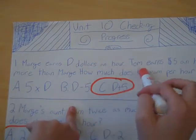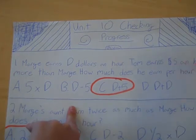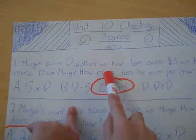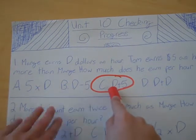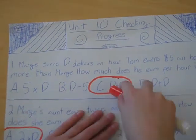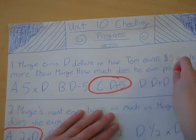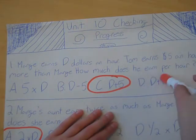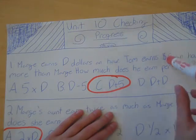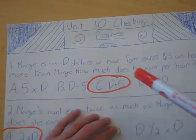Marge earns $3.00 an hour. Tom earns $5.00 an hour more than Marge. How much does he earn per hour? I think it's C, D plus 5, because it says Tom would earn D dollars, but instead he earns $5.00 more than Marge.